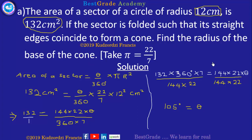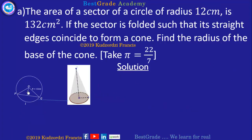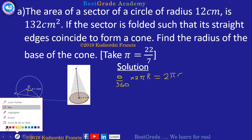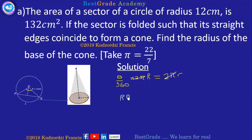Now we need to find the radius of the base of the cone. When the sector is folded, the arc length of the sector equals the circumference of the base of the cone. The arc length of the sector is given by theta over 360 times 2 pi r, and the circumference of the base of the cone is 2 pi r. Cancelling common factors gives r times theta over 360 degrees equals r, the radius of the cone.